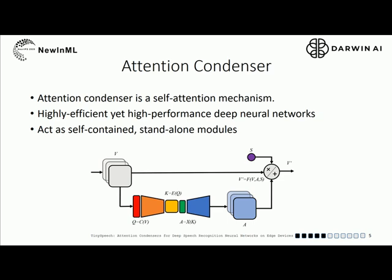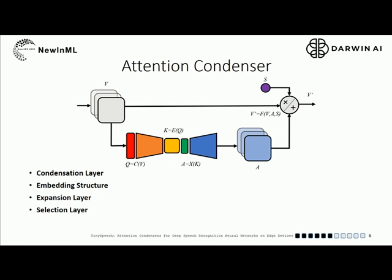It performs selective attention with a greater emphasis on activations in close proximity of strong activations. To reduce the computational complexity of such joint modeling, we condense the input activations to a reduced dimension to strike a balance between modeling capability and computational efficiency. This module is a standalone module, while existing self-attention mechanisms are designed to augment network architectures to improve accuracy at the expense of some complexity. As you can see in the figure, attention condenser consists of a condensation layer, an embedding structure, an expansion layer, and a selective attention mechanism.